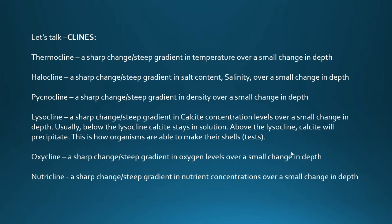Before we go any further, let's talk clines — that's where we see a sharp change in something. A thermocline is a sharp change, or steep gradient, in temperature over a small change in depth. We see thermoclines abundant in tropical oceans, freshwater lakes, and freshwater ponds. A halocline is a sharp change — a steep gradient in salt content, referred to as salinity — over a small change in depth.